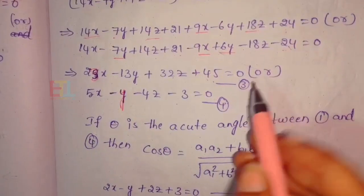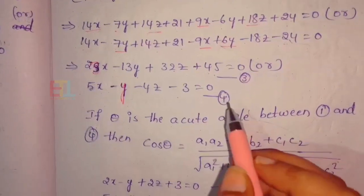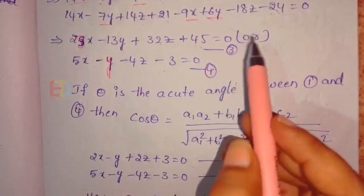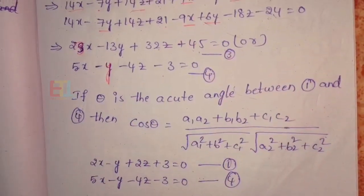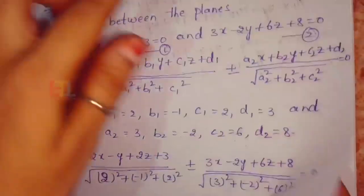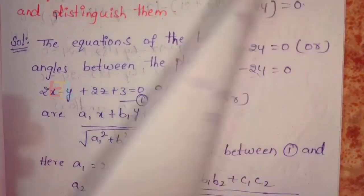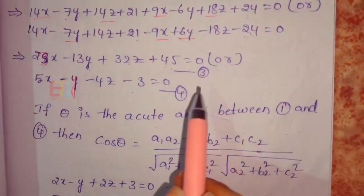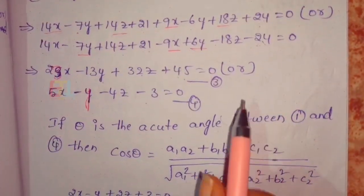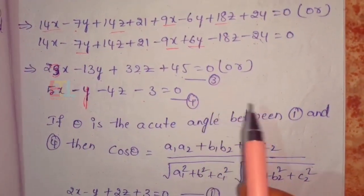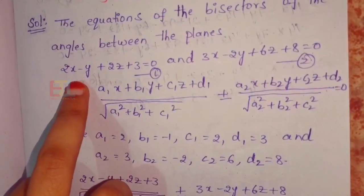These are equation 3 and equation 4. Now we need to distinguish which equation bisects the acute angle and which bisects the obtuse angle between the planes. To find the angle between equations 1 and 4, this is a simple and easy calculation.